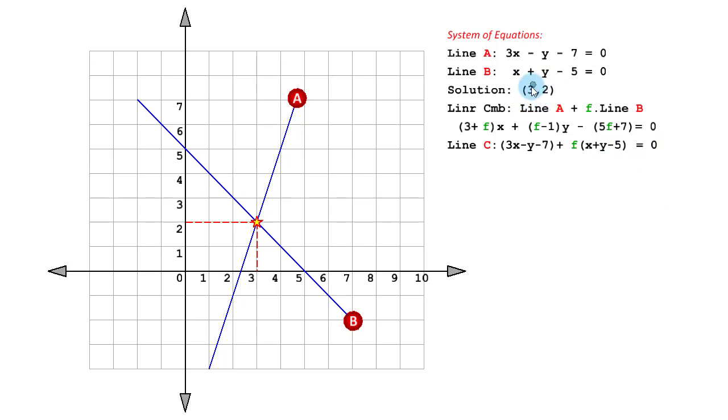Now if we substitute this point, the solution of these two equations, what will happen? This point lies on line A, so it will satisfy the first equation and make this first bracket 0. It lies on the second line as well, so it makes this second bracket 0. So if we substitute x equal to 3 and y equal to 2, it makes this bracket 0 and this bracket 0, satisfying the equation 0 equal to 0. That tells us that this line C is going to pass through this point 3 comma 2, the intersection of these two lines.